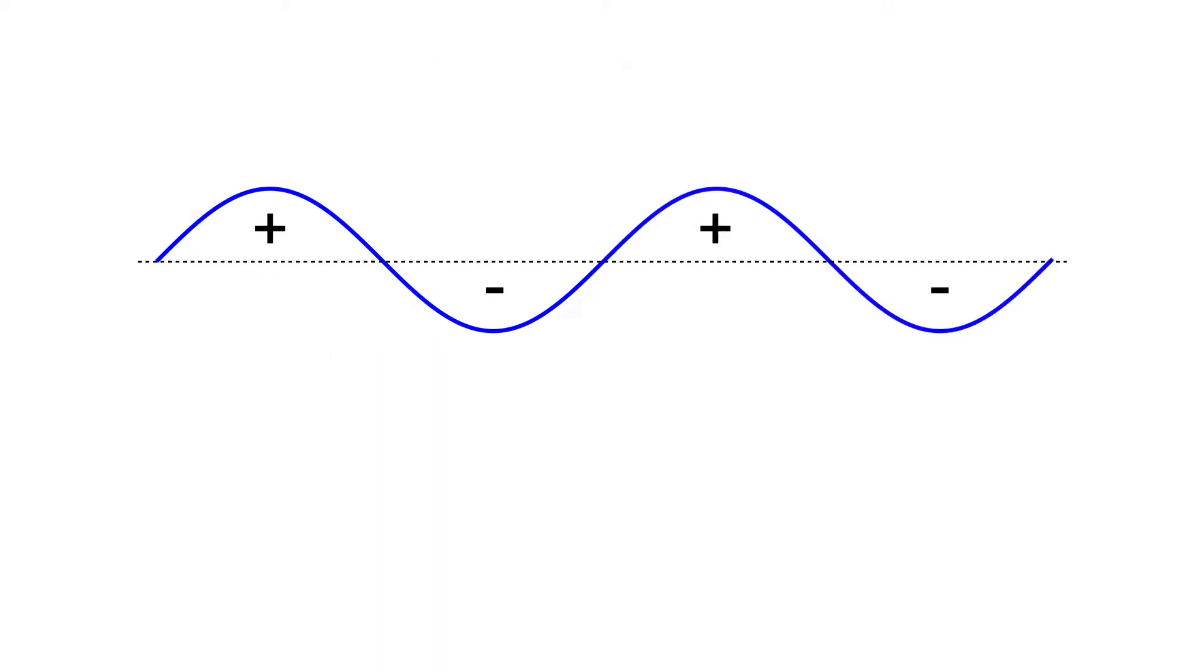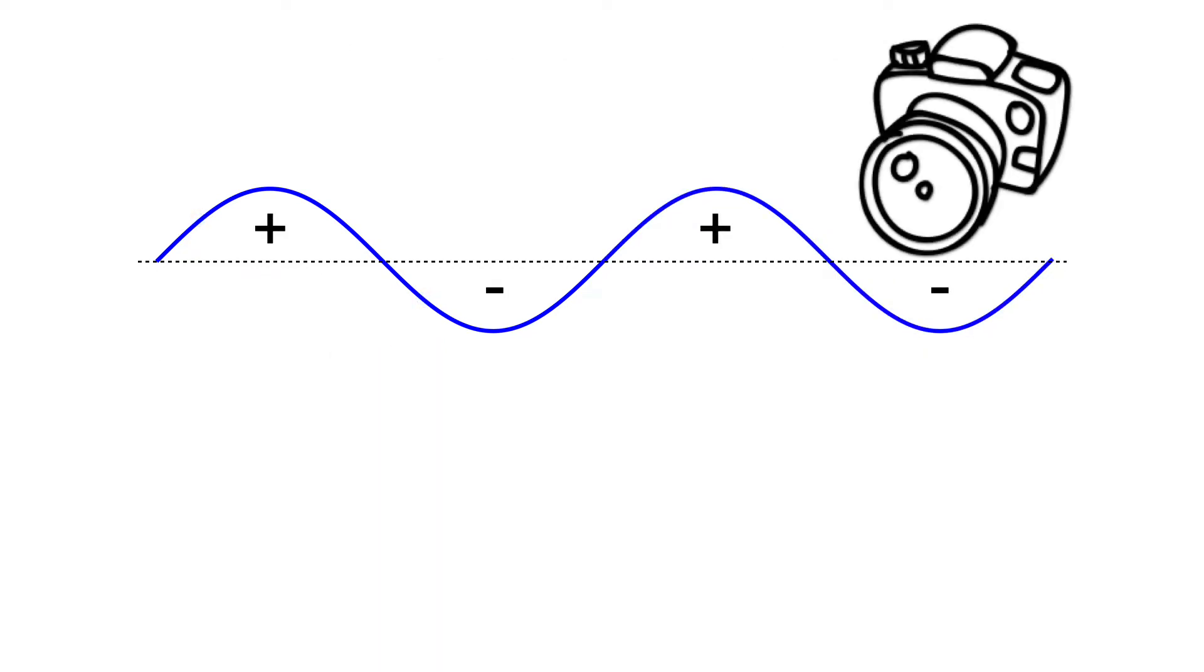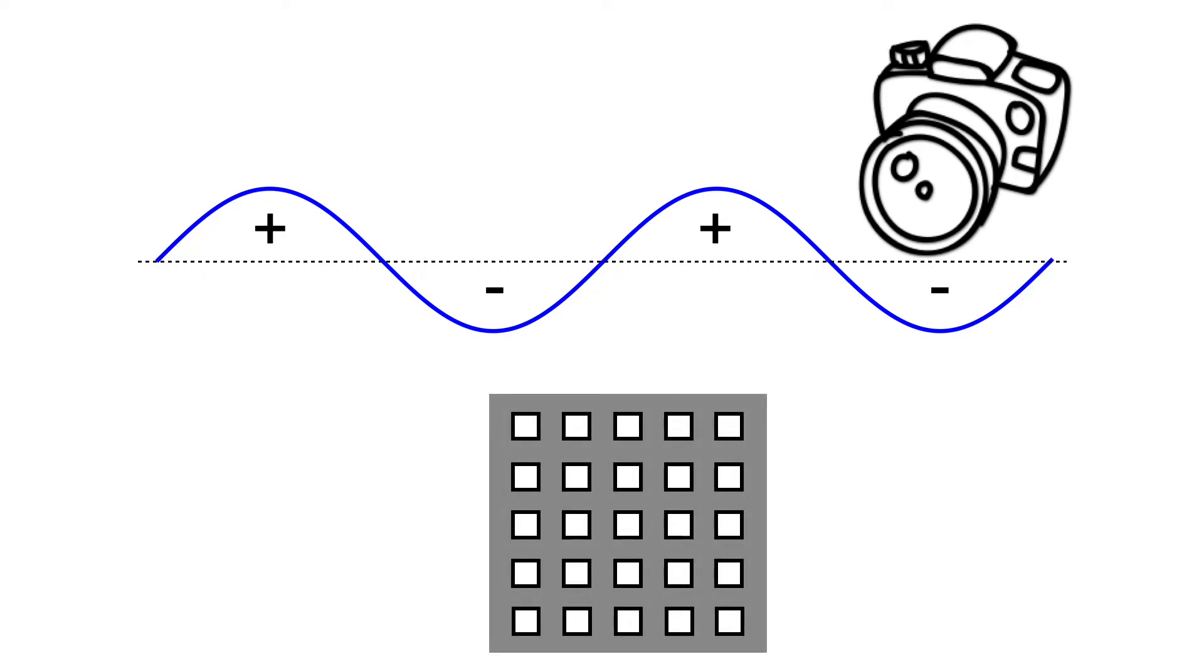So suppose you want to take a photograph of this sine curve. Your camera needs to have more than four photodiodes across. OK, but why should we care about sine curves? Well, it turns out that any curve can be expressed as a sum of sinusoids. For example, this curve is not a sine wave, but it's the sum of these two sine wave pieces.